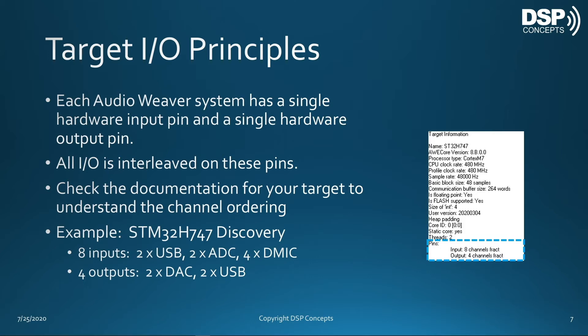For example, on the STM32H747 Discovery Board there are eight inputs: two USB, followed by two ADC, followed by two digital mics. There are also four outputs — the first two go to the DAC and the next two are USB audio back to the PC.